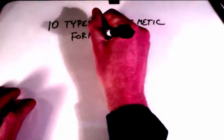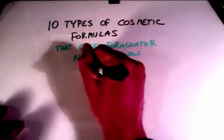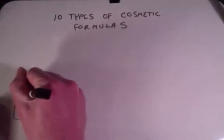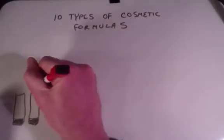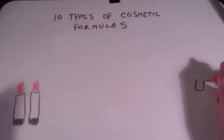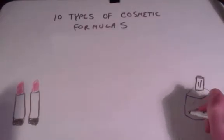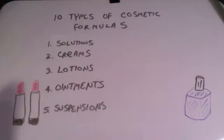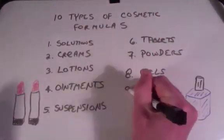Now on to the top 10 cosmetic formulation types. While there are literally thousands of different types of cosmetic products, there are actually only 10 different types of cosmetic formulas. Here is a brief overview of those types, including what they are, how they're made, and when you might use them. As a formulating chemist, you should make it a point to learn to make each type, even if your company doesn't currently make these particular products. These include solutions, creams and emulsions, lotions, ointments and pastes, suspensions, tablets, powders, gels, sticks, and aerosols.